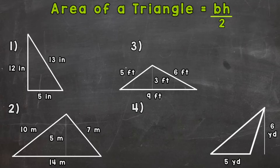Our formula for finding area of triangles is at the top of your screen: BH divided by 2. That means base times the height divided by 2, and that's going to give us the area of the triangles on your screen or any triangle that you are finding the area of. You have four problems on your screen that we are going to work through together.